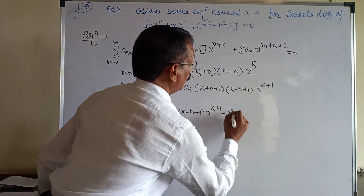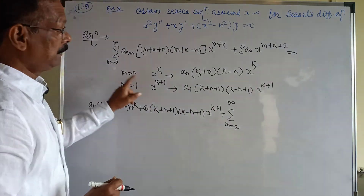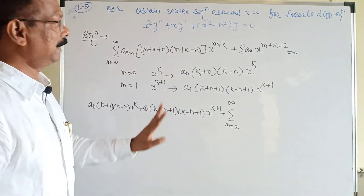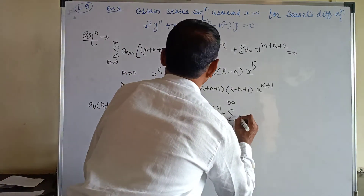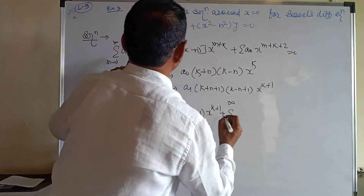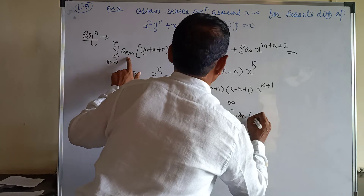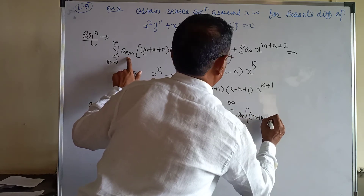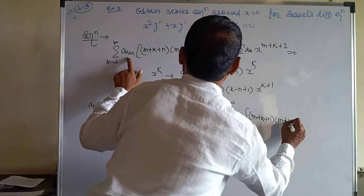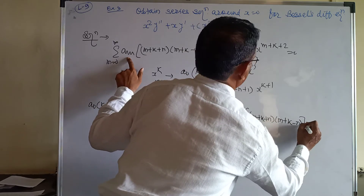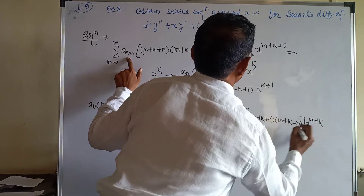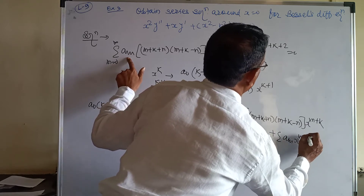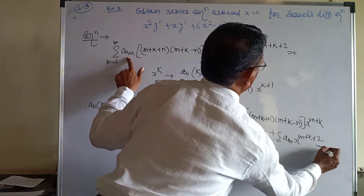The remaining summation runs from m = 2 to infinity. Replacing the index by shifting m → m+2 (so the sum starts from 0), every m is replaced by m+2, giving aₘ₊₂(m+k+n+2)(m+k+2−n) x^(m+k+2) + aₘ x^(m+k+2) = 0.